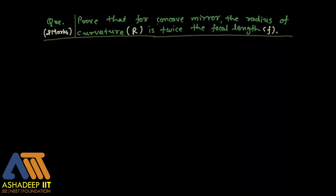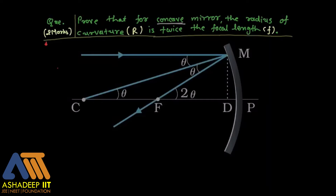Now we will prove that for a concave mirror the radius of curvature is twice the focal length. The same can be asked for convex as well. First, the diagram: when an object is placed at infinite distance, all the incoming rays travel parallel to the principal axis and then reflect back. The point of incidence M is part of a sphere.